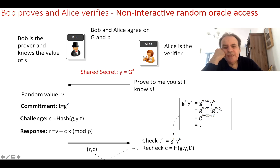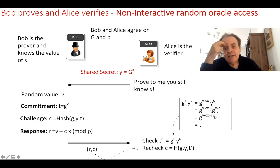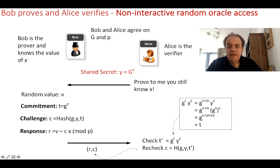Using logarithm rules, as we know from John Napier, (g^x)^c = g^(x·c). So we end up with g^(v - c·x + c·x), the two c·x terms cancel out, and we are left with g^v, which is t — the original commitment.